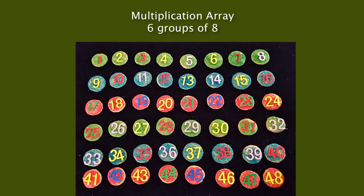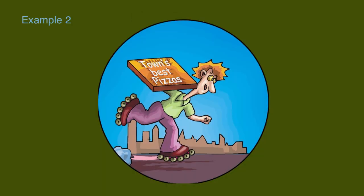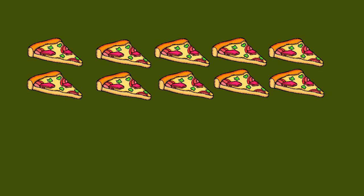Let's look at some other examples. There are 5 people in our family, and I want to order enough pizza for each person to have 2 slices each. How many slices do I need? I've got 2 groups of 5, which is 10. So 2 times 5 is 10, and I will need 10 slices of pizza.